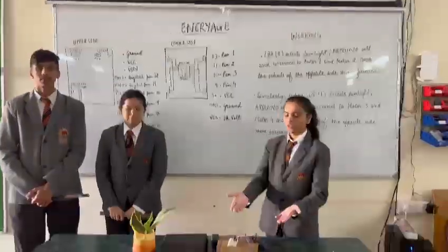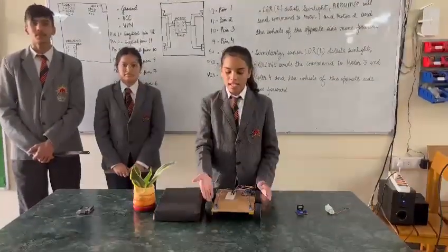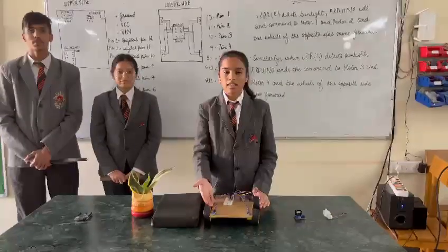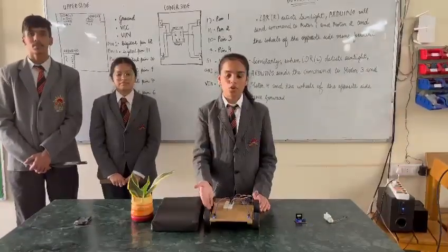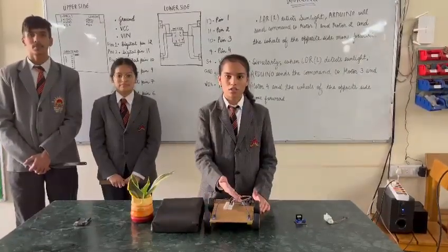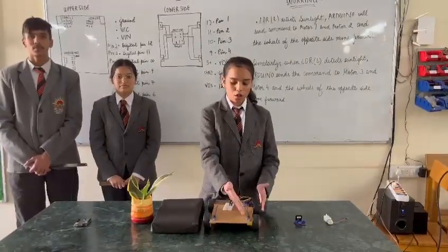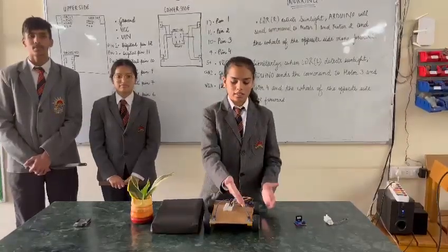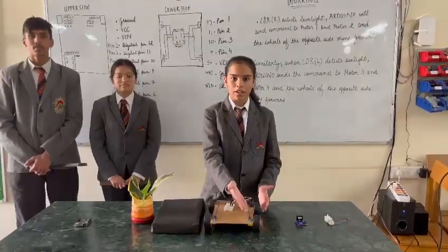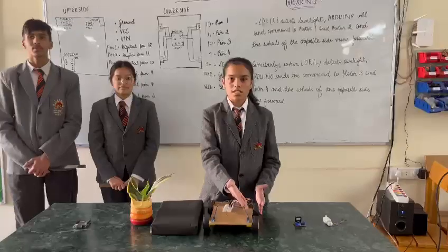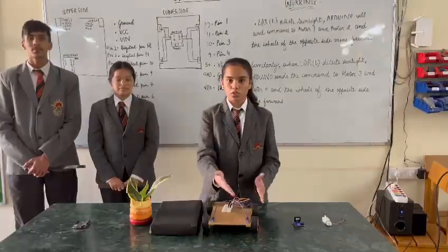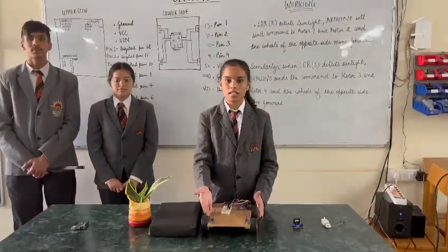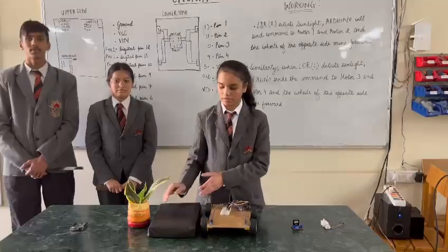This is the prototype LDR. When the right side of the LDR detects sunlight, the Arduino sends the command to motor 1 and motor 2, and the wheels of the opposite side move in this direction. Similarly, when the LDR left detects sunlight, the Arduino sends the command to motor 3 and motor 4, and the wheels of the prototype move in this direction.